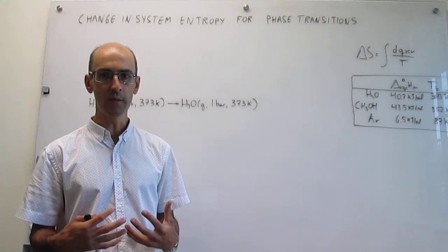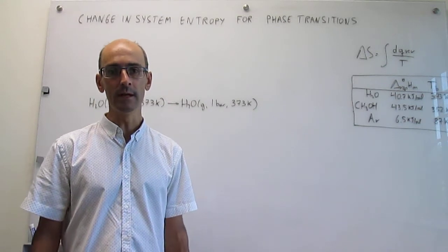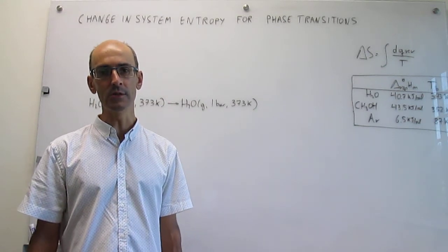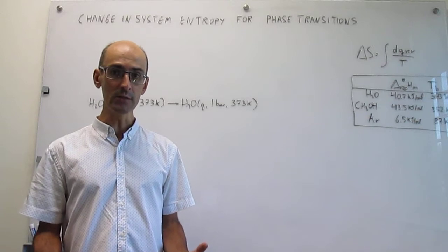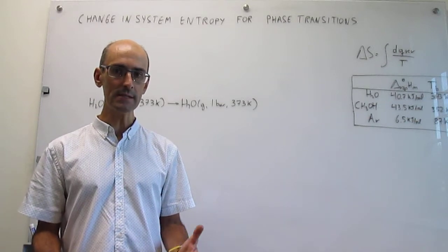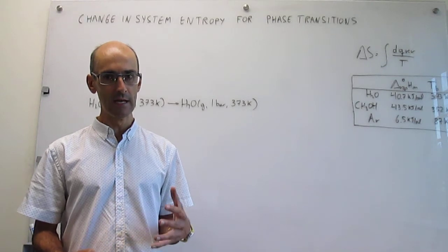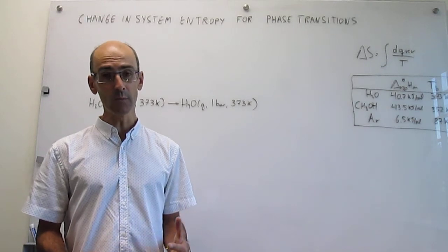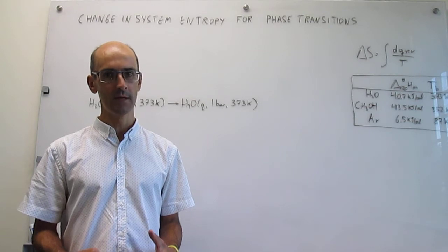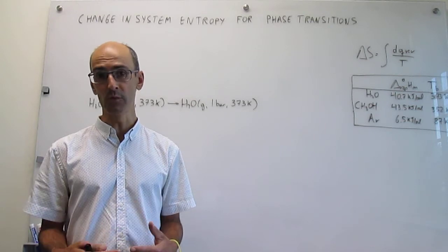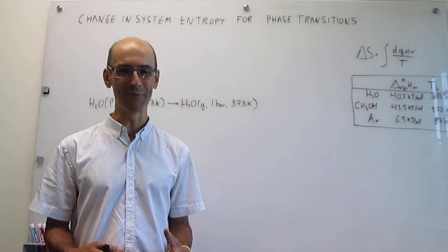The question is how do we calculate the change in entropy when a phase transition is taking place? In this video we are going to see two different cases: one that is easy — phase transitions at equilibrium — and the other that is a little bit more complicated, which is phase transitions not occurring at equilibrium.